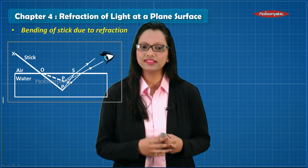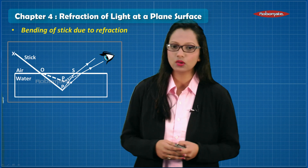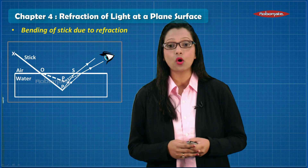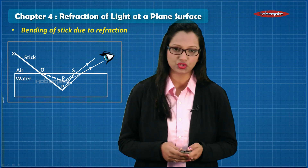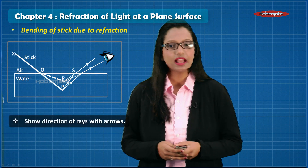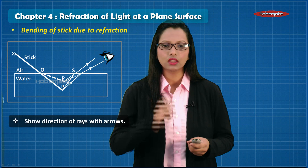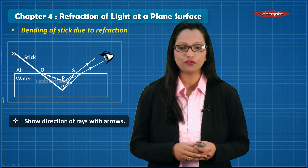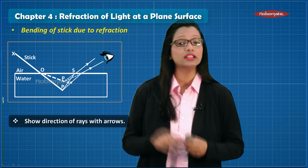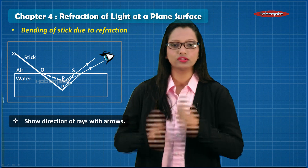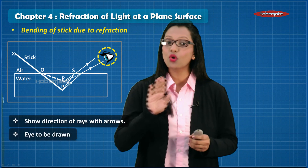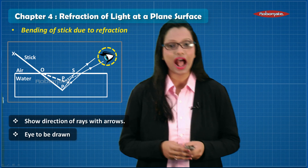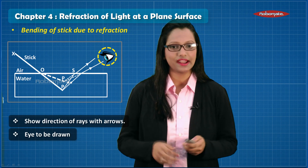For the diagram of bending of a stick due to refraction, one thing we tend to forget is drawing arrows on the rays. Also, do not forget to draw the eye at the end of the diagram.